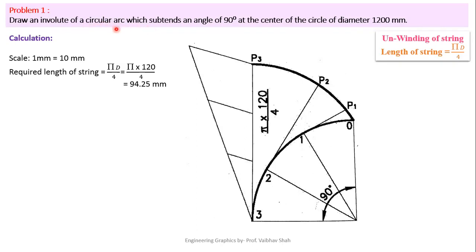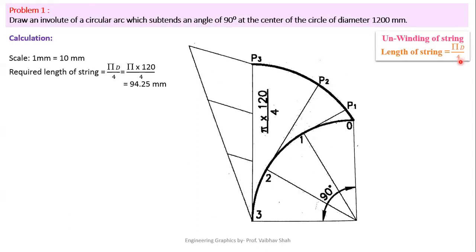The circular arc sustains an angle of 90 degrees, so we must first construct that circular arc, and then draw the involute of that arc. Here we will take the unwinding condition of the string, and the length of the string would be πd/4. Because the total degrees turned by the circle is 360 degrees, and if we are turning just 90 degrees, that means we are taking the 4th part of the circle. So if the circumference is πd, then πd/4 would be the length of our string.